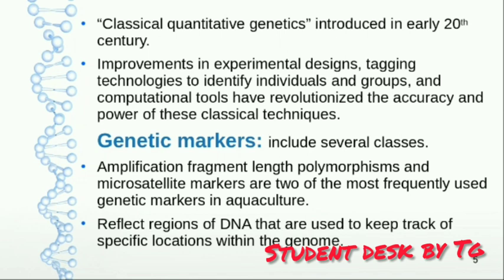Classical quantitative genetics was introduced in the early 20th century. This is our traditional method, which requires providing the same environment to everyone. It is expensive. However, it uses experimental design, staking, and technology to identify traits, which makes it less costly to apply. This is why we use classical quantitative genetics methods, and breeders select based on this.